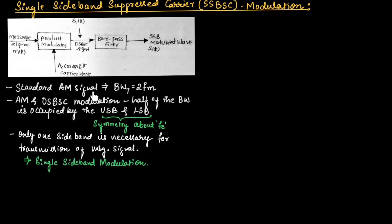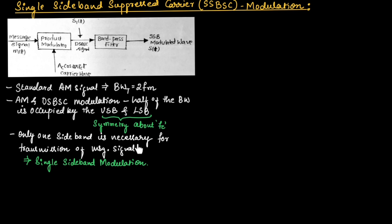The standard AM signal as well as DSBSC modulation requires a transmitted bandwidth of 2FM. The upper and lower sidebands are uniquely related to each other since they are symmetric — equally distributed — about the carrier frequency FC. Hence, only one sideband is necessary for transmission of the message signal, and this modulation is known as single sideband modulation.